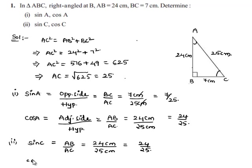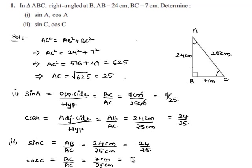We are also asked to find the value of cos C. We know that cos of an angle is adjacent side by hypotenuse. Here, the adjacent side for angle C is BC and the hypotenuse is AC. So cos C = BC/AC = 7/25.